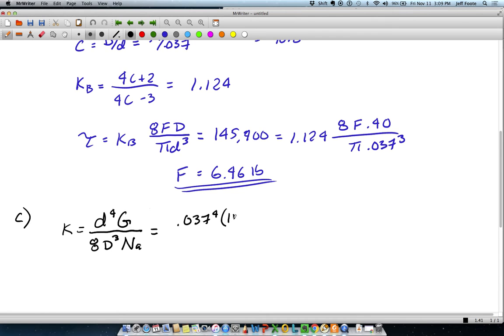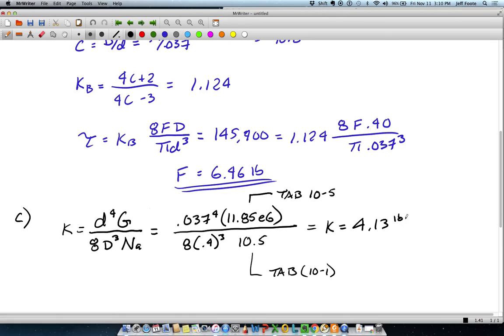G here, you can calculate that from Young's modulus, but it is tabulated for you in table 10-5 for various materials and that sort of thing. The number of active coils is going to be 10.5 in this case. That's also a table resource, that's table 10-1. Remember, the number of active coils has to do with the total number of coils as well as the end conditions of the spring. Here the ends are squared, that essentially takes two turns out of the active count. So we started with twelve and a half turns, took two turns out. We have a k value of 4.13 pounds per inch.